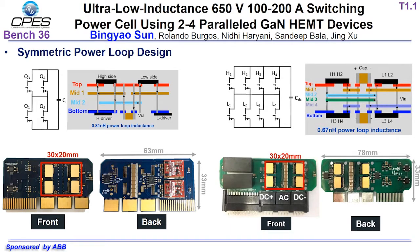To parallel four GAN devices, a six-layer PCB is used for the power loop design. Here are two devices on the top layer and the other two parallel devices located at the bottom layer, back-to-back with the devices on the top layer. In this way, the footprint area of the four parallel GAN is the same as the area of two parallel GAN. The gates of all four GAN devices gather within this area.